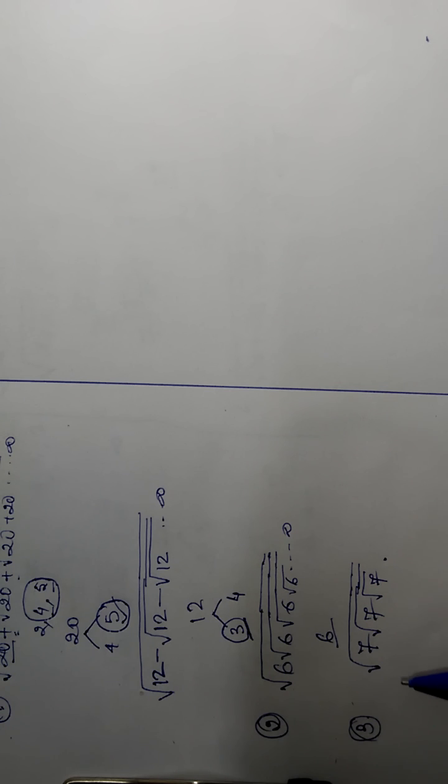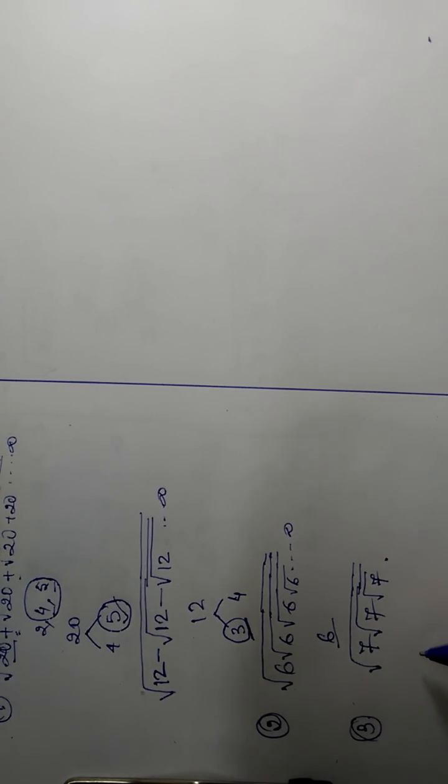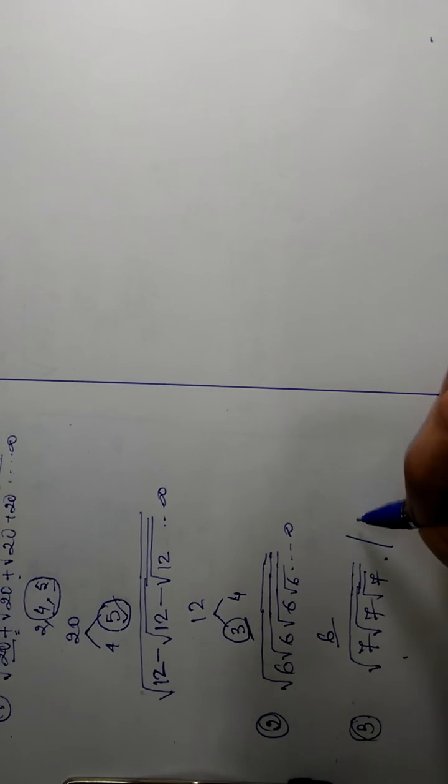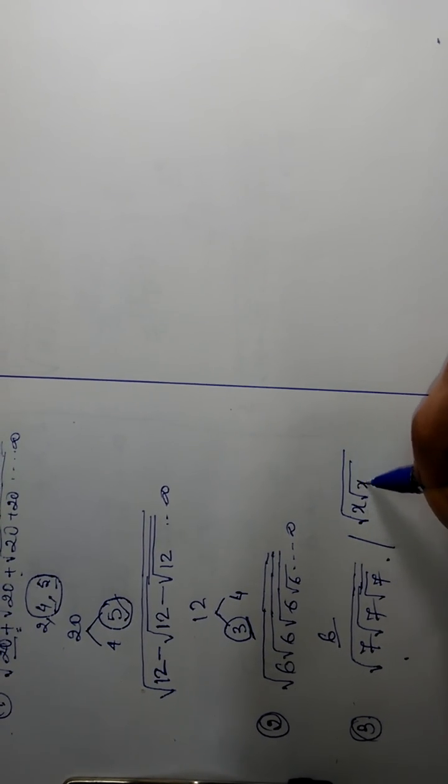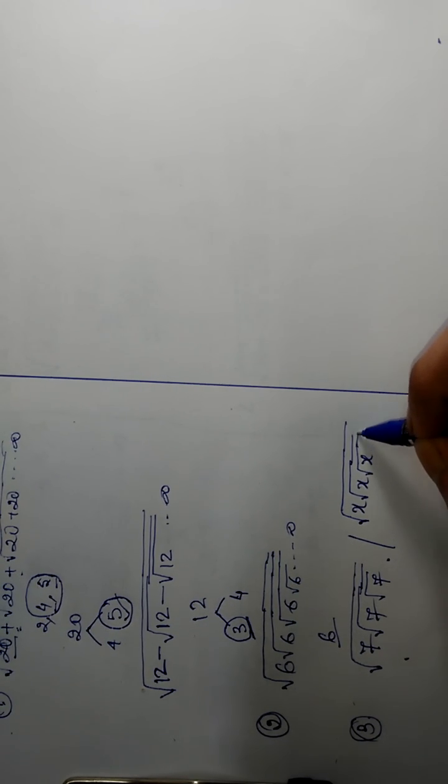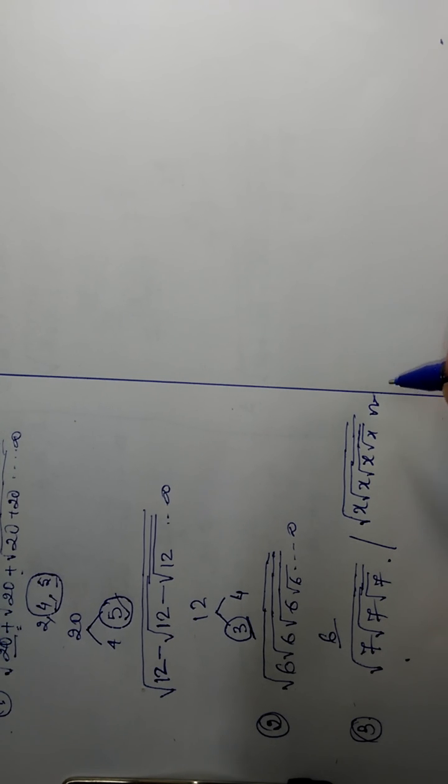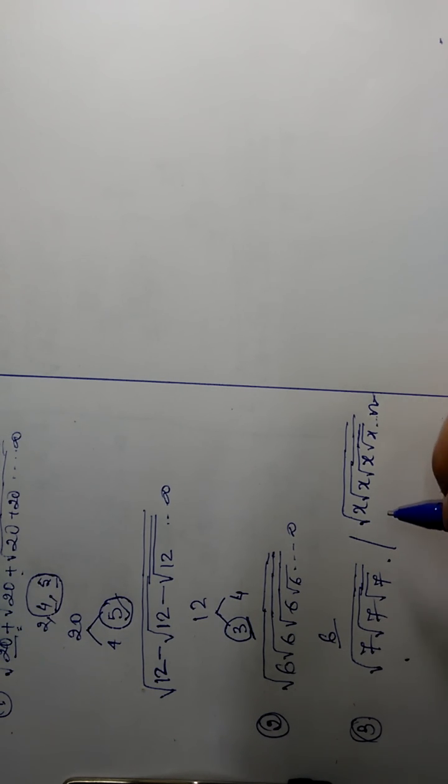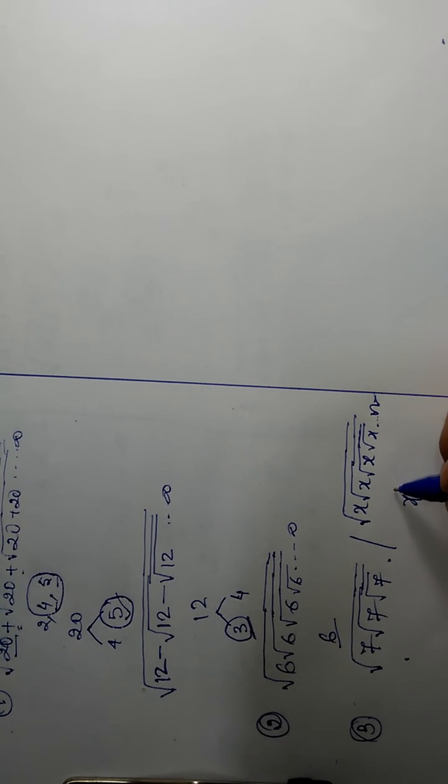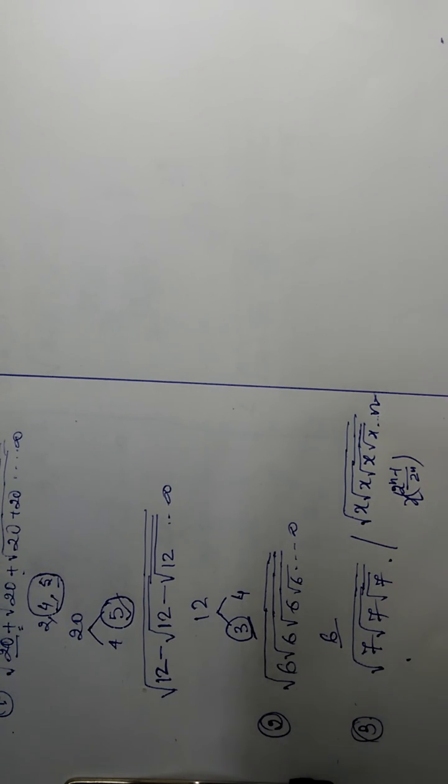So for this question, let's solve a generalized method. That is, take x, x, x, x, and so on up to n times. So the generalized equation is x to the power (2 to the power n minus 1) by 2 to the power n. This is the generalized equation. Remember this: this minus 1 is 2 to the power n, not n minus 1. It is 2 to the power n minus 1.